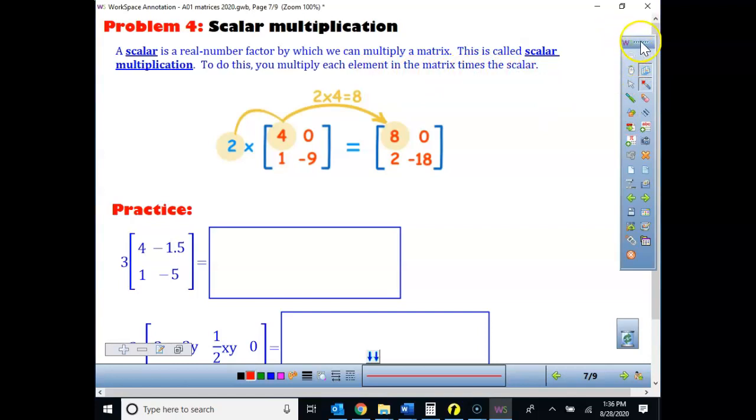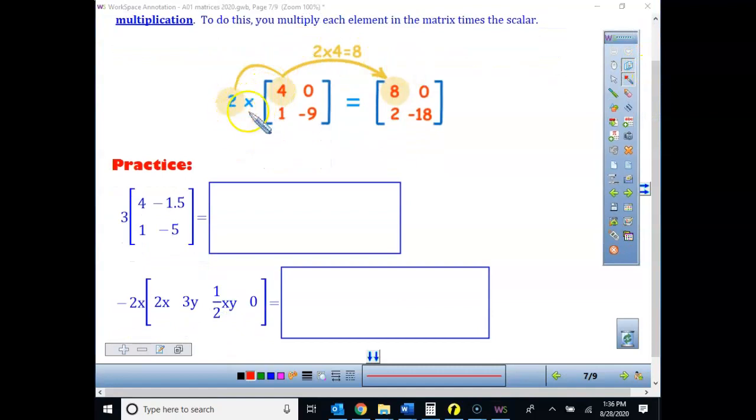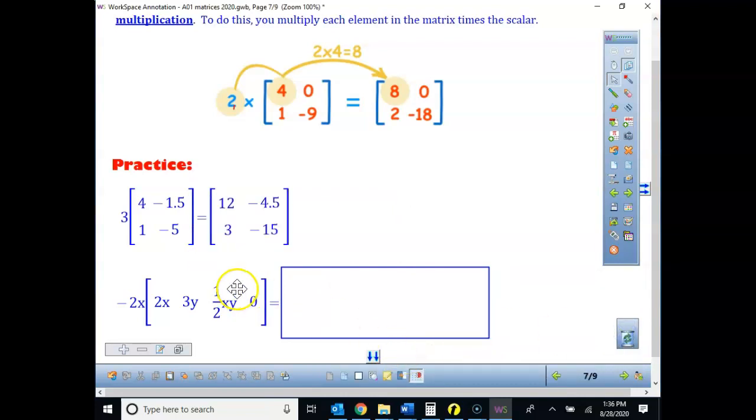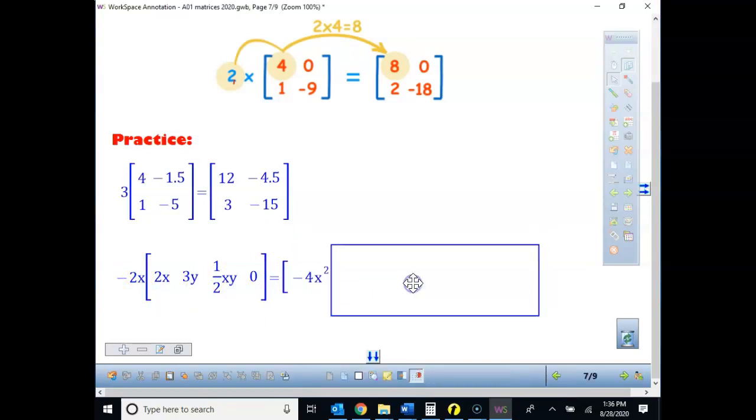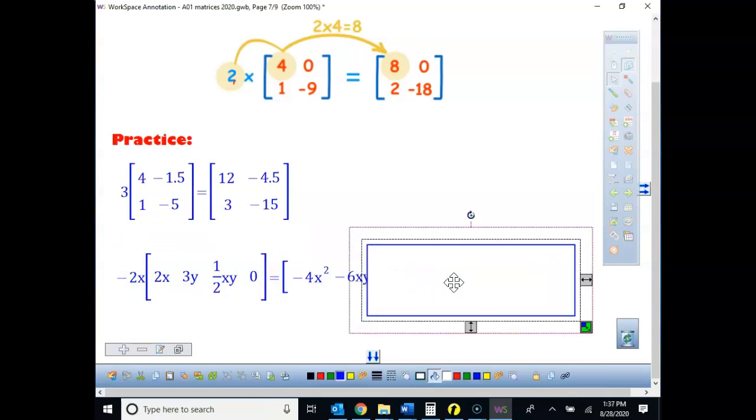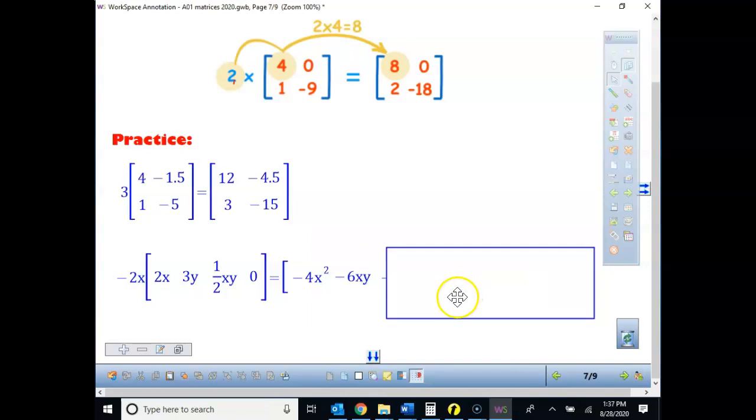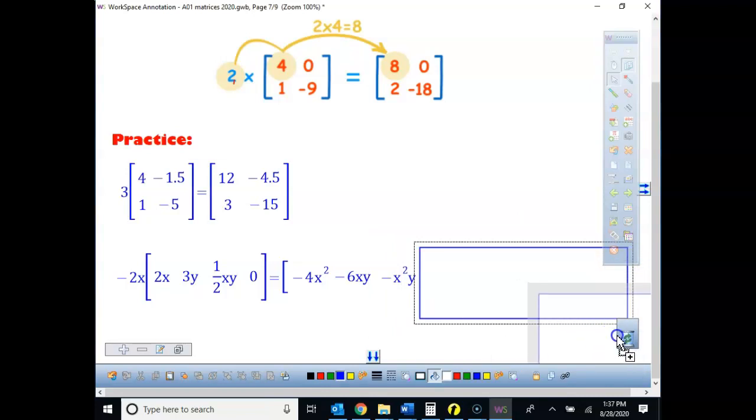So if you think about this, this is a little bit of review of distributive property from last year. So all you are going to do is take everything inside that matrix times 2. So in this case, everything times 3. Again, make sure you put your matrix. You might want to pause the video and try and do these too. Here's our first one. 12, negative 4 and a half, 3, negative 15. Again, you don't have to show what you are multiplying. You are just going to give your answer. So here, we got to remember how when we multiply x times x, that we are going to start off with a negative 4x squared. We're going to take negative 2x times the 3y, not like terms. So the coefficients, the 2 and negative 3 multiply, we get negative 6xy. We're taking half times a negative 2. That's going to be a negative 1x squared y. And 0 times anything should give us 0.